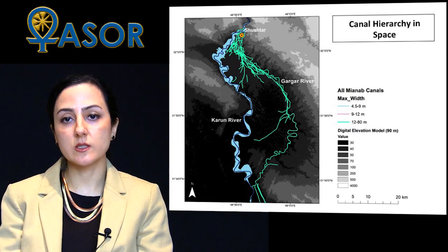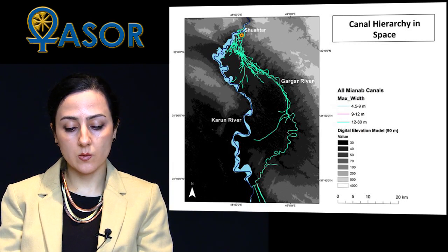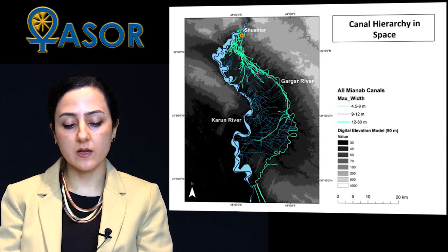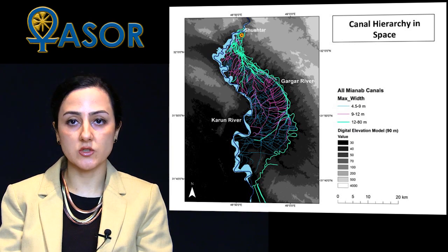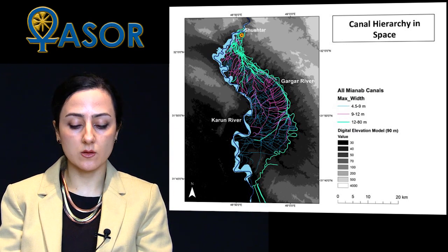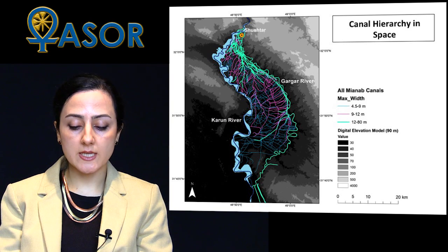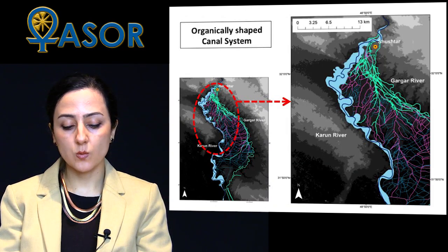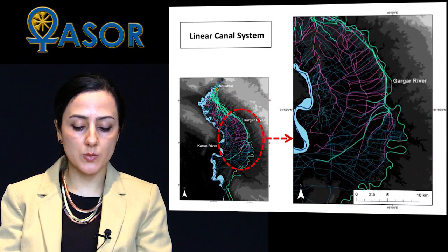When broken down by size categories, the distribution of canals over the survey area seems to be related to canal widths. The larger canals between 12 and 80 meters wide are found in the upstream parts of the area, either in the north or along the Gargar River, whereas the smaller canals between 4.5 and 9 meters wide are mostly found in the downstream parts to the south. The middle-sized canals between 9 and 12 meters wide seem to connect larger and smaller canals as one would expect in a gravity-based system. The distribution suggests the existence of two or three canal systems in the survey area: an upstream one with more organically shaped canals, and a more downstream one with more linear canal features.